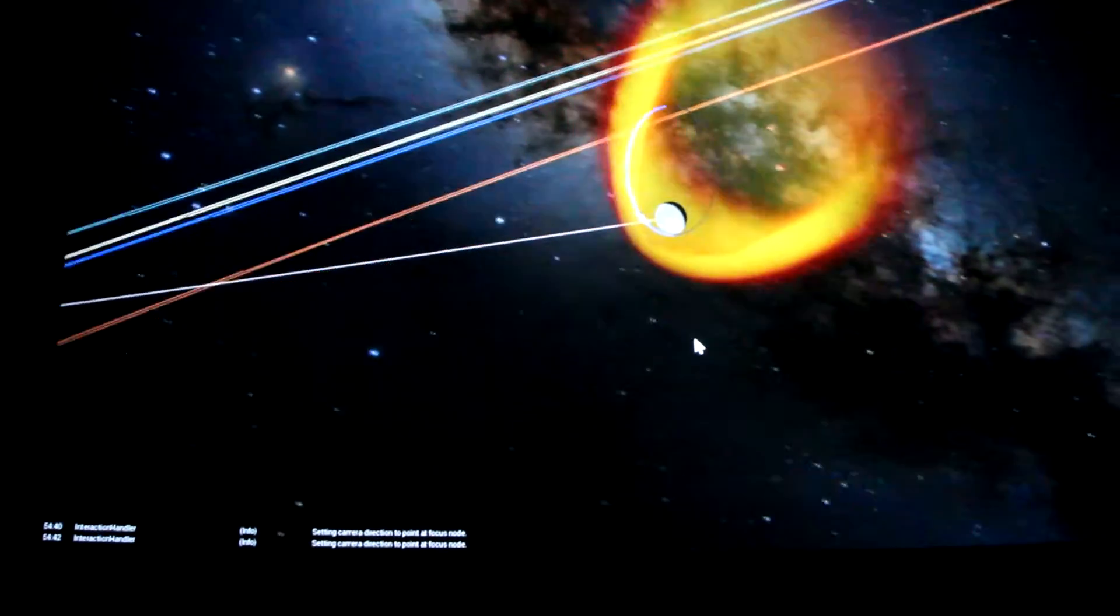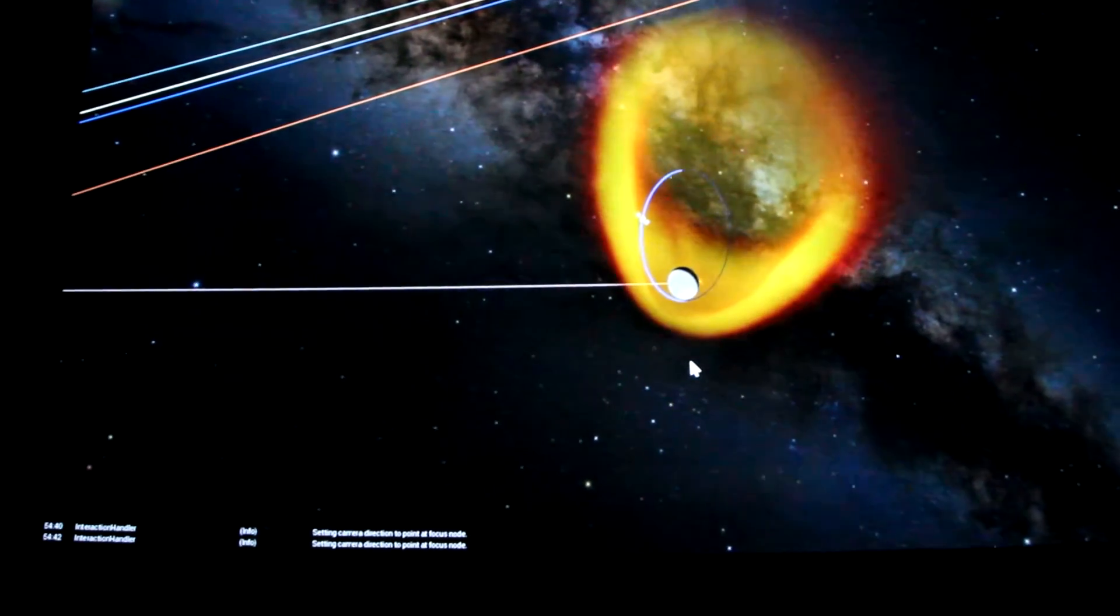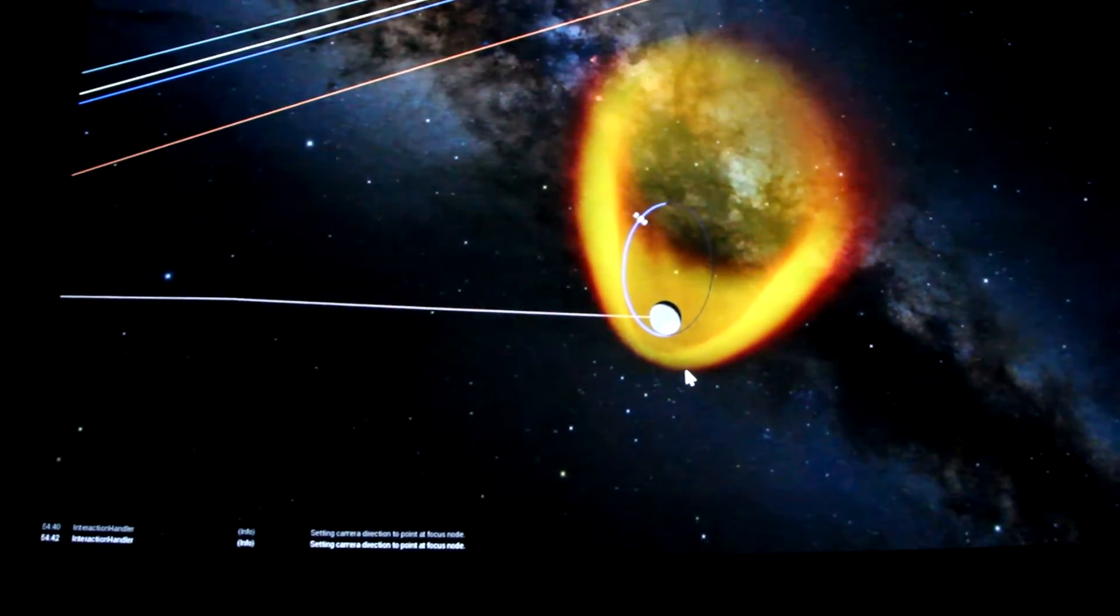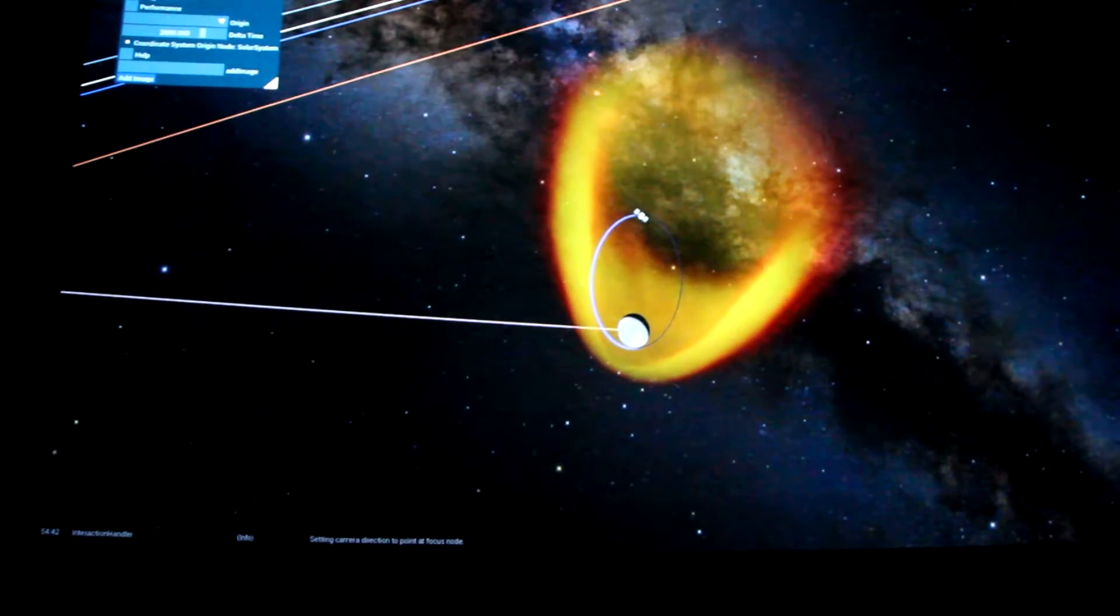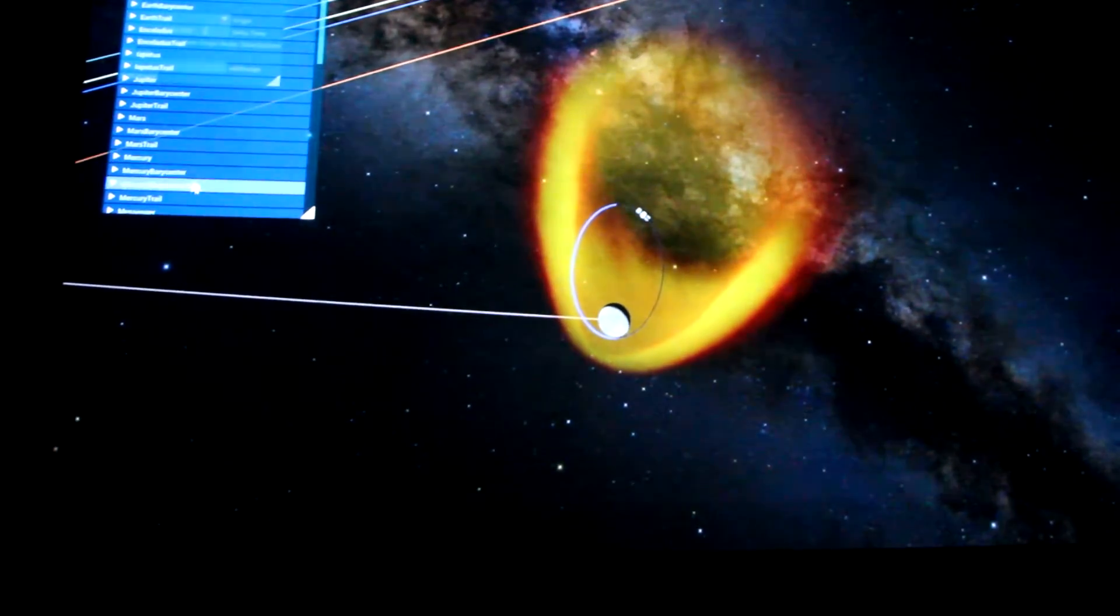Make sure you toggle off the magnetosphere if you're going to come in close to the spacecraft. The magnetosphere is actually very dangerous, and if we fly into it we'll risk our lives.